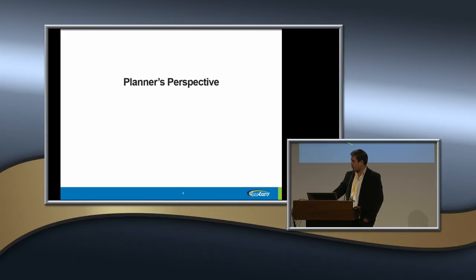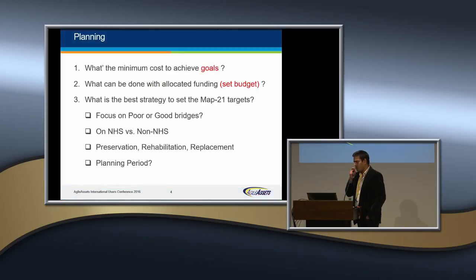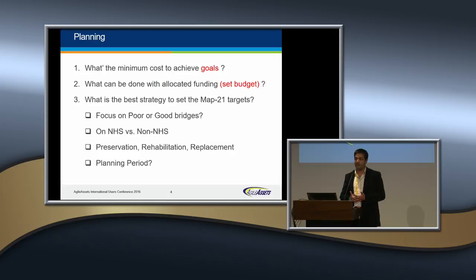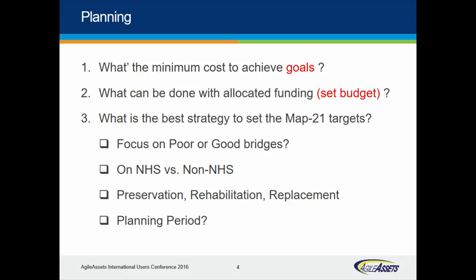From a planner's perspective, these are very simple questions we hear day in and day out meeting with legislators, asset management directors, and planners in our agencies. One of the things you are always worried about is cost — what is the minimum cost to achieve certain performance measure goals, and what is the minimum amount of funding needed to meet your established targets?